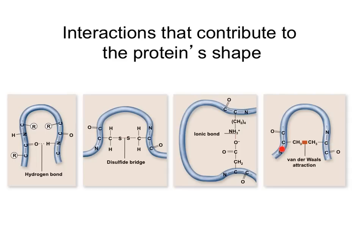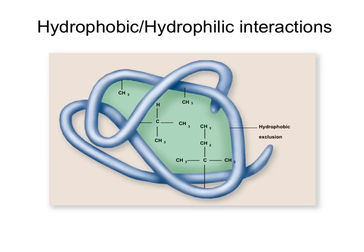Or they also can form van der Waals attractions, which are interactions between hydrophobic amino acids. Hydrophobic amino acids want to shield themselves from the hydrophilic environment, or the water around them. So they will form these hydrophobic exclusion areas in which they're all folded onto themselves. So all these interactions result in the tertiary structure of the protein.